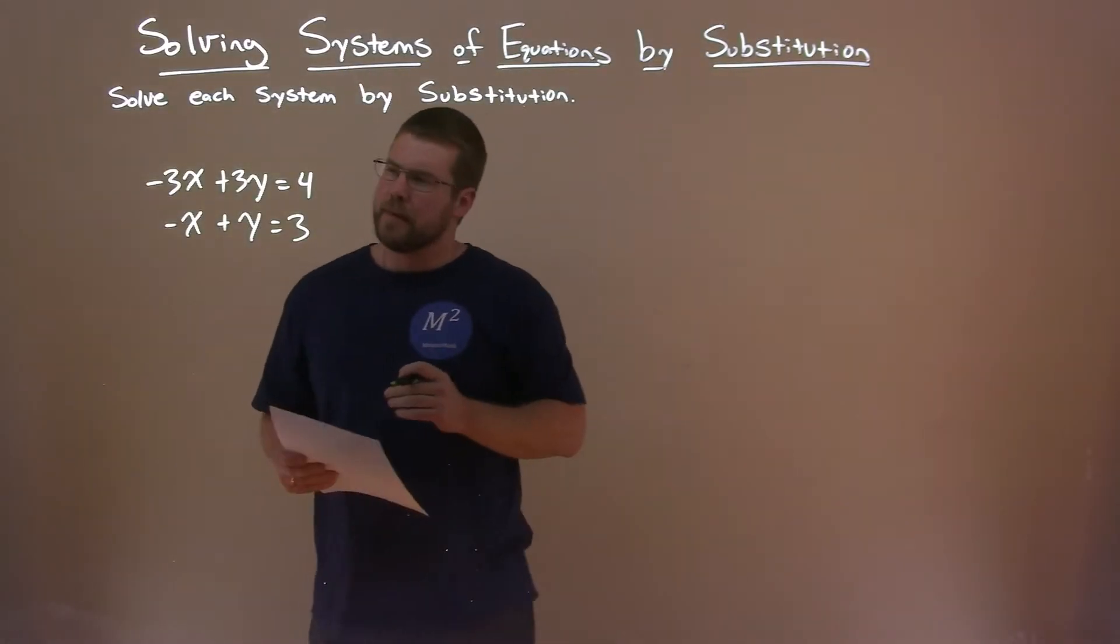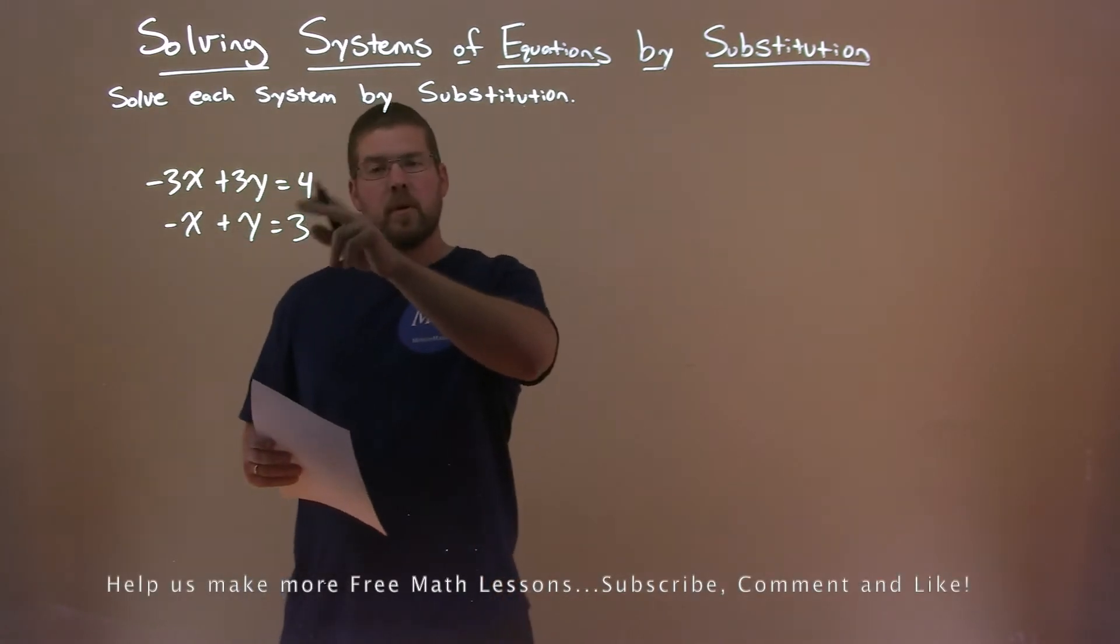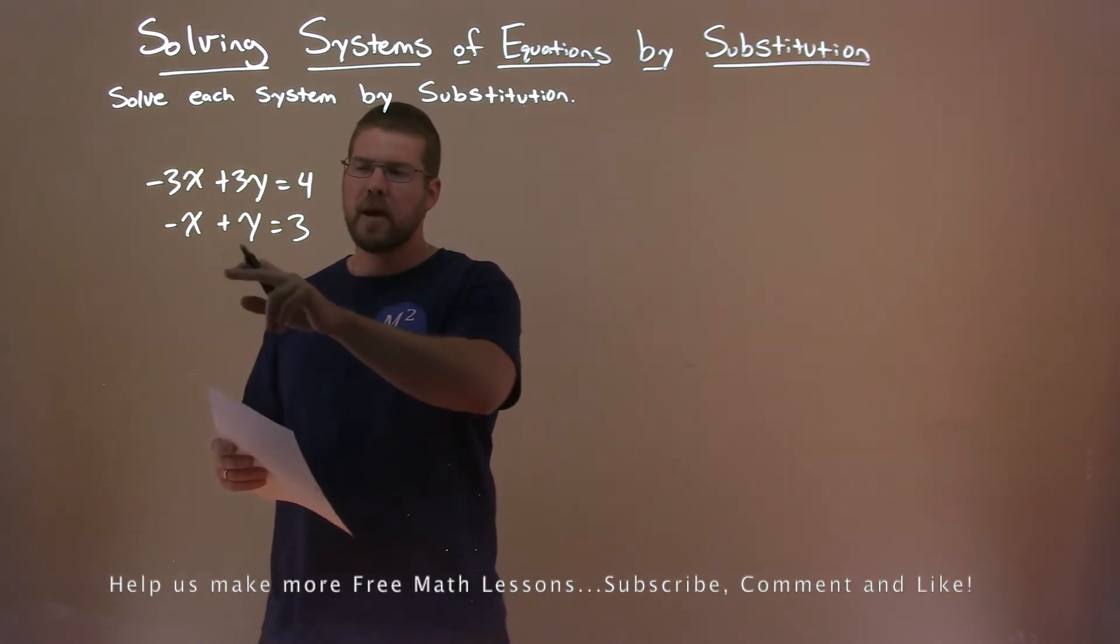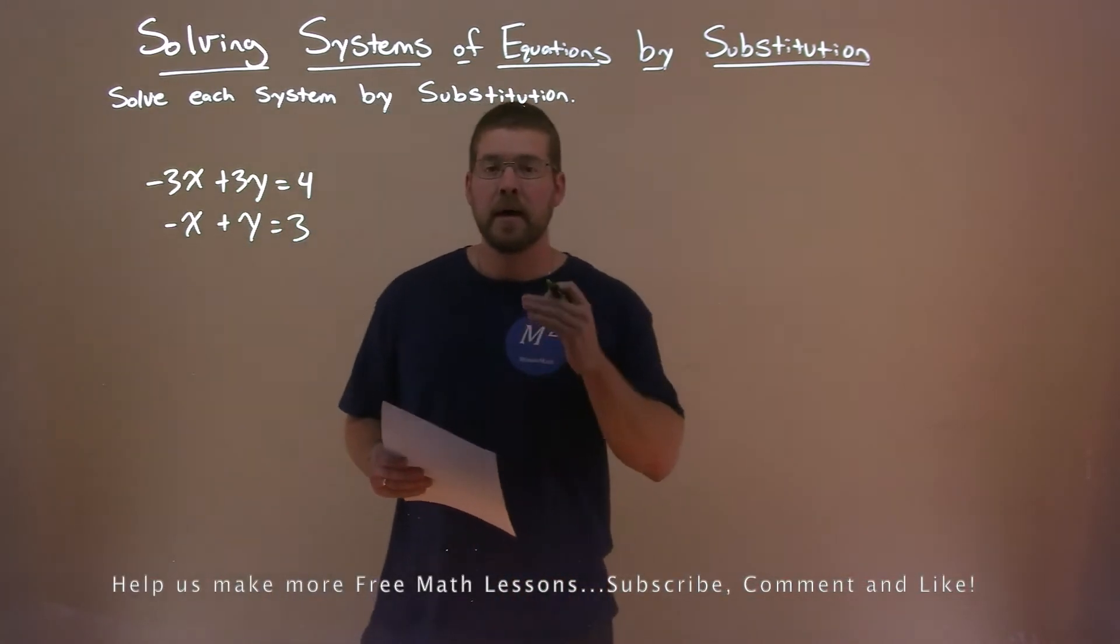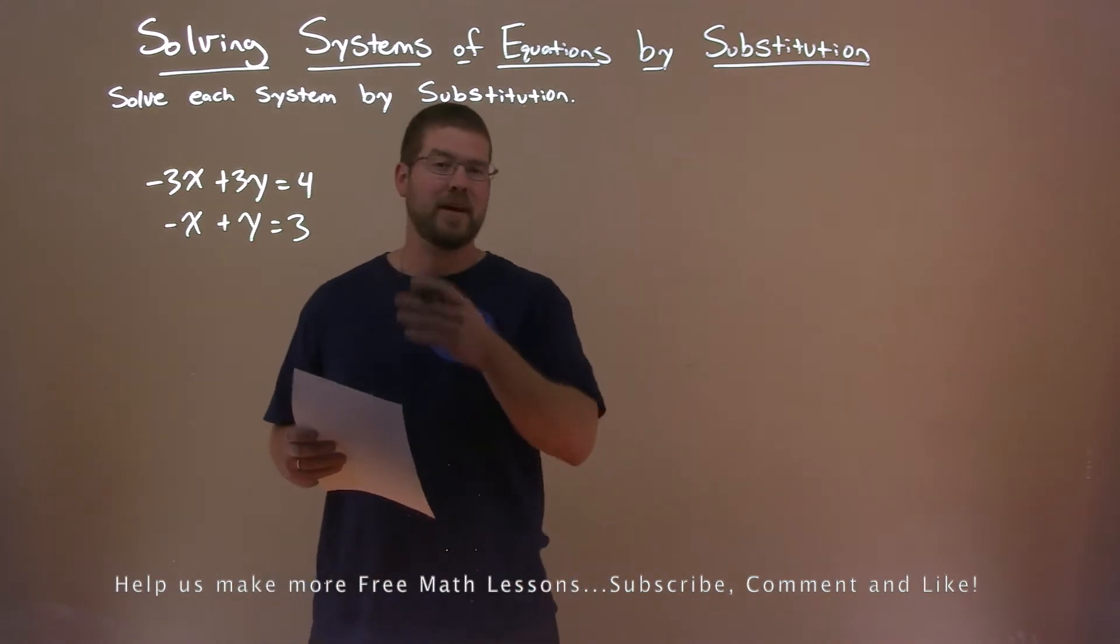We're given this problem here. Minus 3x plus 3y equals 4, minus x plus y equals 3, and we want to solve the system by substitution.